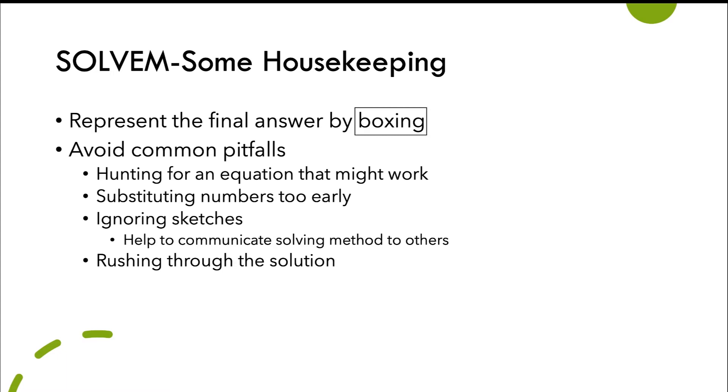First, I want you to avoid hunting for an equation that might work. This is really common, especially in introductory level physics and chemistry classes, is that you might just go through all the possible equations until you find the one that has some of the variables you think you might need, and then you run without actually understanding what's going on. That is dangerous, and I would highly recommend you avoid it.